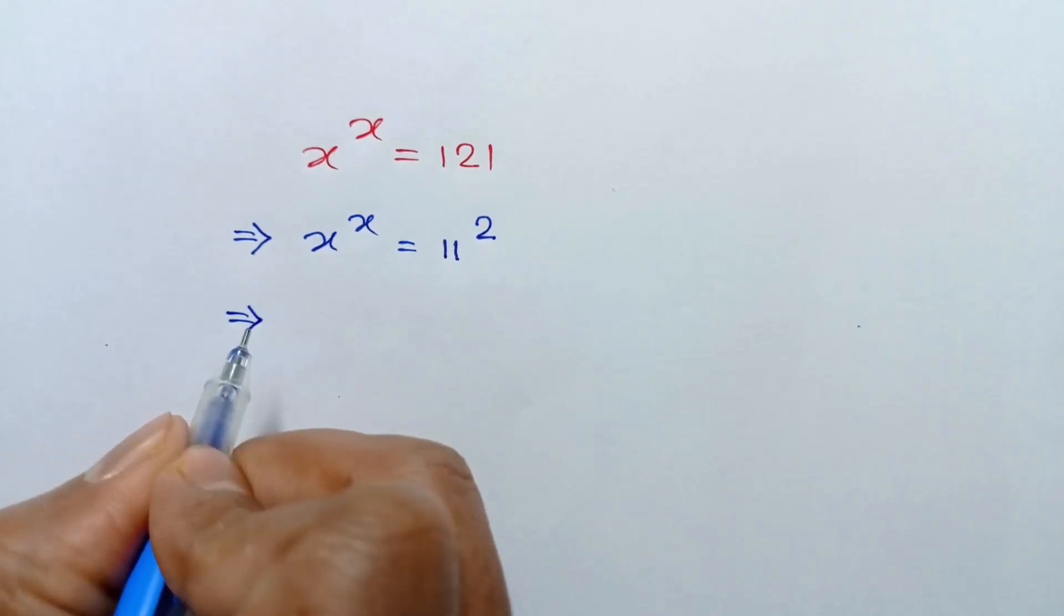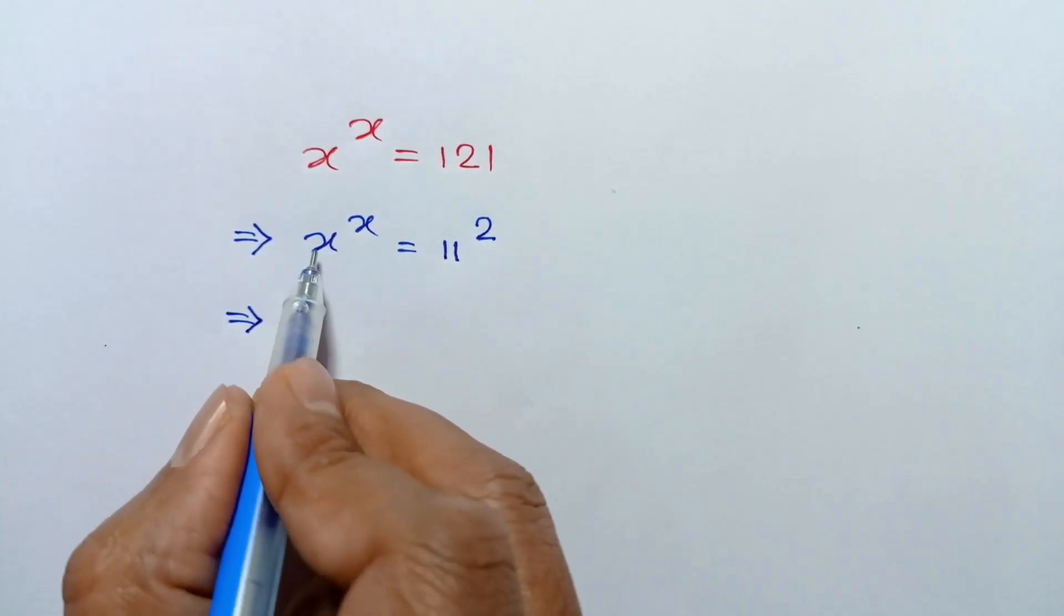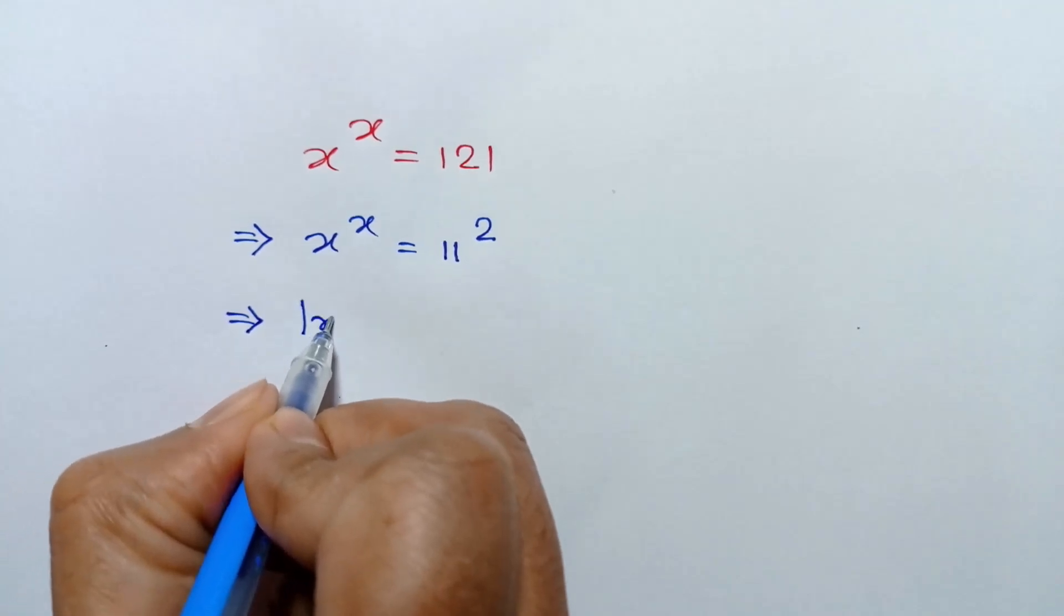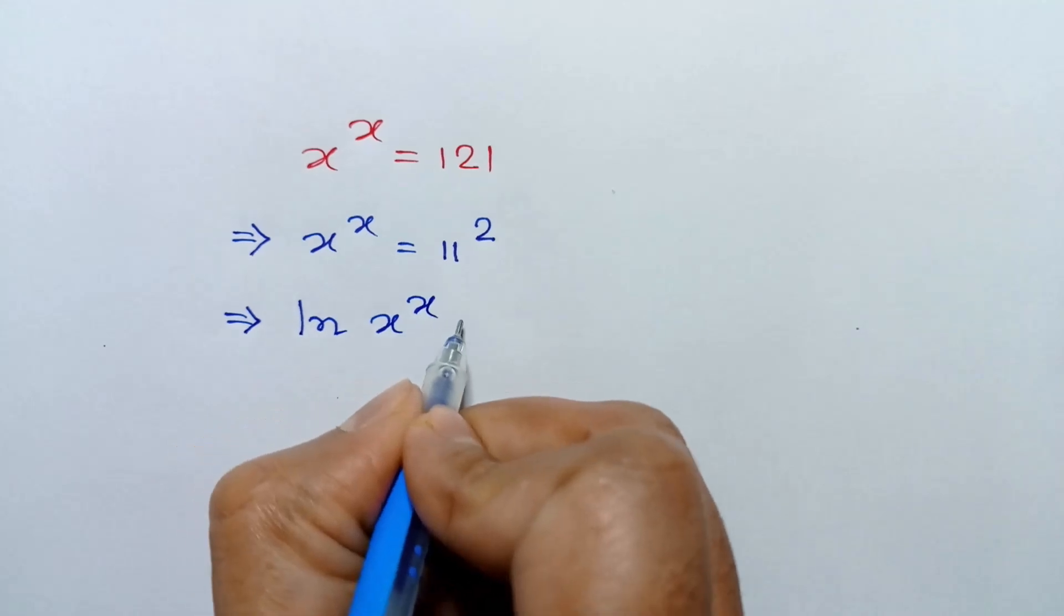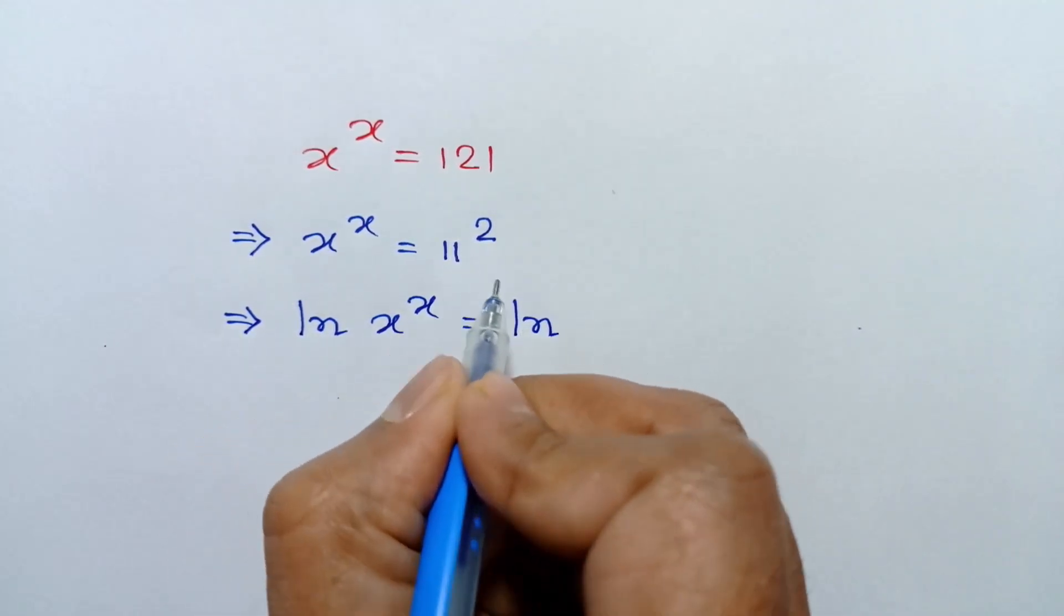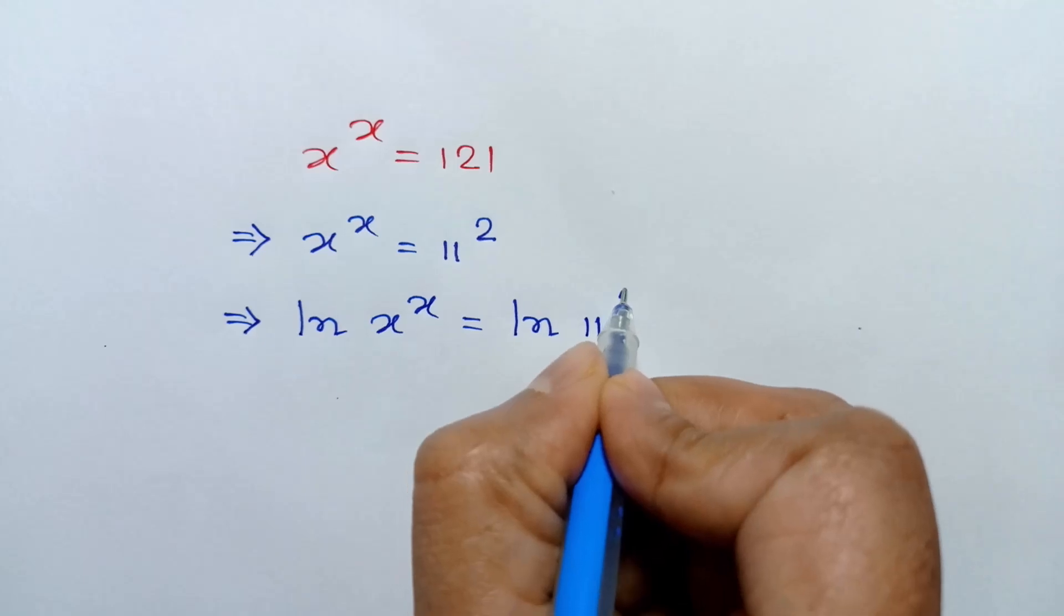Taking ln of both sides, we can write ln of x to the power x equals ln of 11 squared.